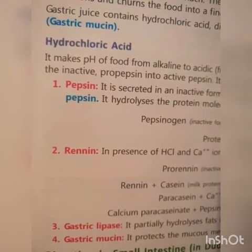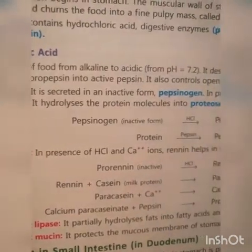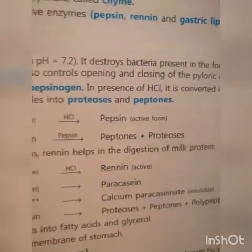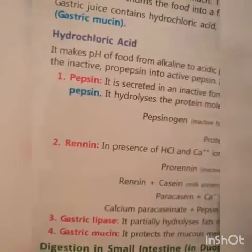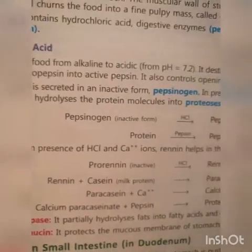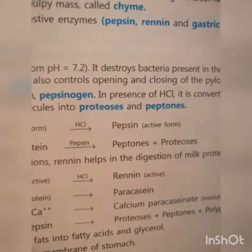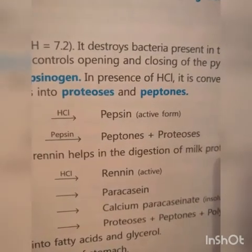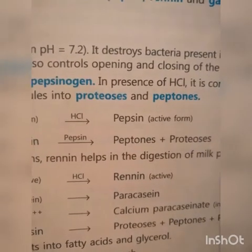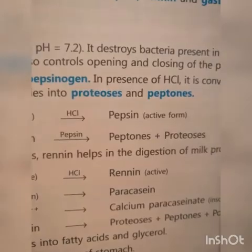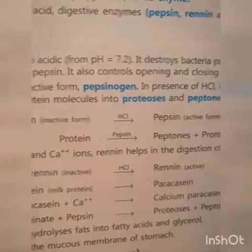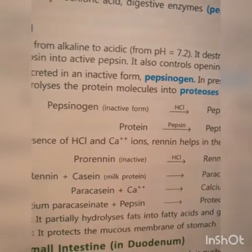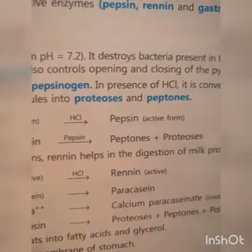Pepsin is secreted in inactive form — that is, Pepsinogen. In the presence of HCl, it is converted into active Pepsin. Pepsin hydrolyzes protein molecules into proteoses and peptones, meaning Pepsin breaks down bigger protein molecules into smaller ones.